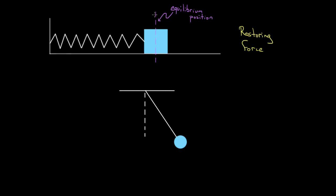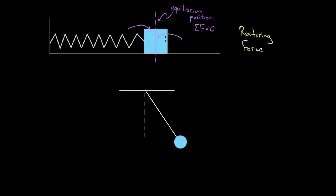For this mass on the spring sitting at the equilibrium position, the net force would be zero — that's what we mean by equilibrium. If you just placed the mass there, it would stay there. However, if I pull this mass to the right, the spring is going to try to restore the mass back to the equilibrium position — it pulls to the left. And if I push the mass to the left, the spring pushes to the right. It always tries to restore the mass back to the equilibrium position.